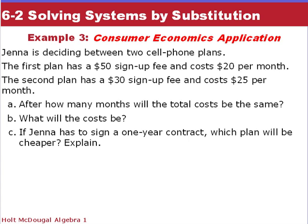Now we're looking at a story problem again. Jenna is deciding between two cell phone plans. The first plan has a $50 sign-up fee and costs $20 per month. The second plan has a $30 sign-up fee and costs $25 per month. After how many months will the total cost be the same? What will the cost be? And if Jenna has to sign a one-year contract, which plan will be cheaper and explain? So in our last lesson, we had a graph. We had an example like this. Here we'll solve the system by substitution.